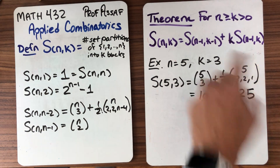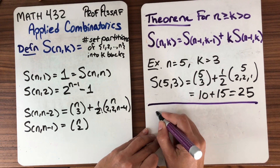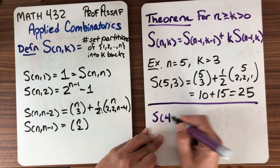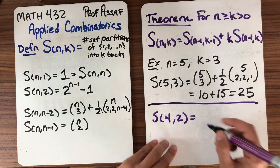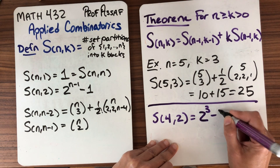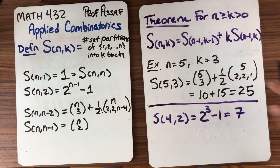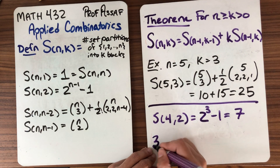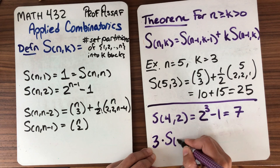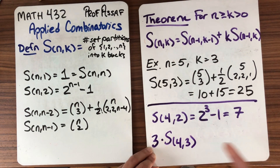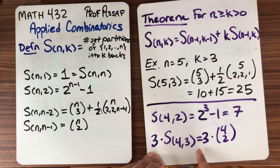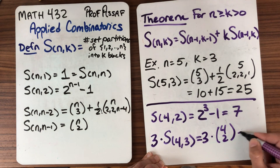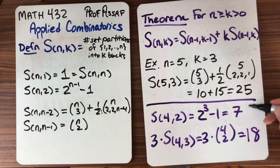Now what about the other terms in the recurrence? S(N-1, K-1) = S(4,2) — we use the formula: 2^(4-1) minus 1, which is 7. And S(N-1, K) = S(4,3). Using the other formula, this is 3 times 4 choose 2. Since 4 choose 2 is 6, we get 6 times 3 equals 18. And 18 plus 7 is indeed 25. So the theorem's true, at least in this example.